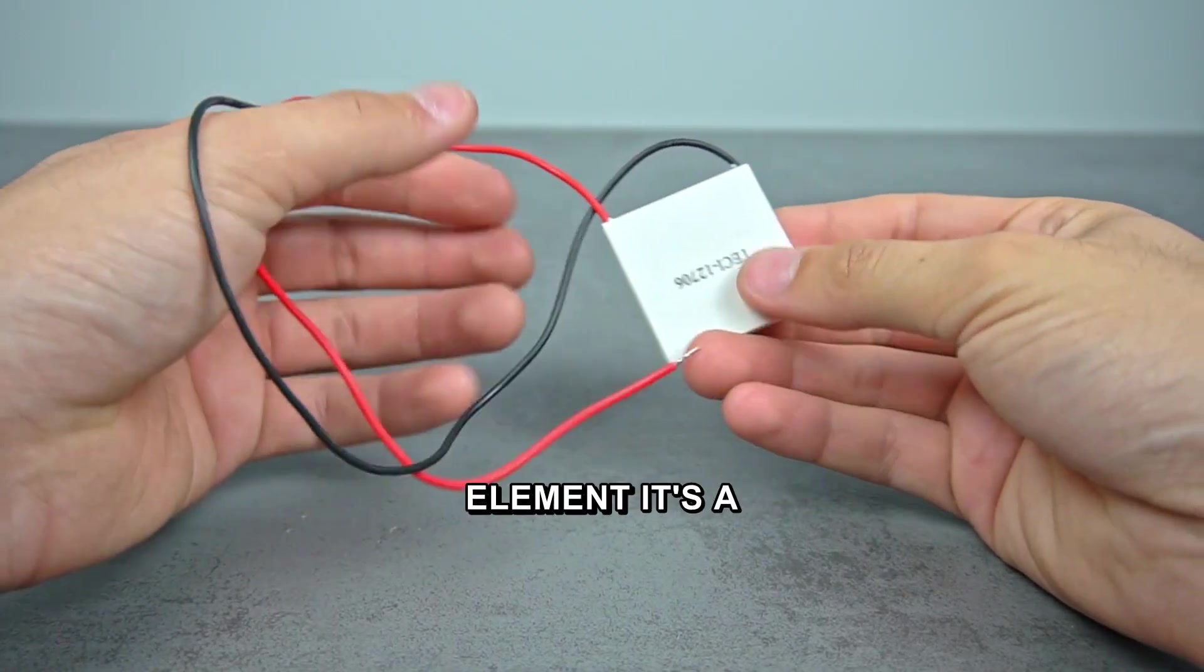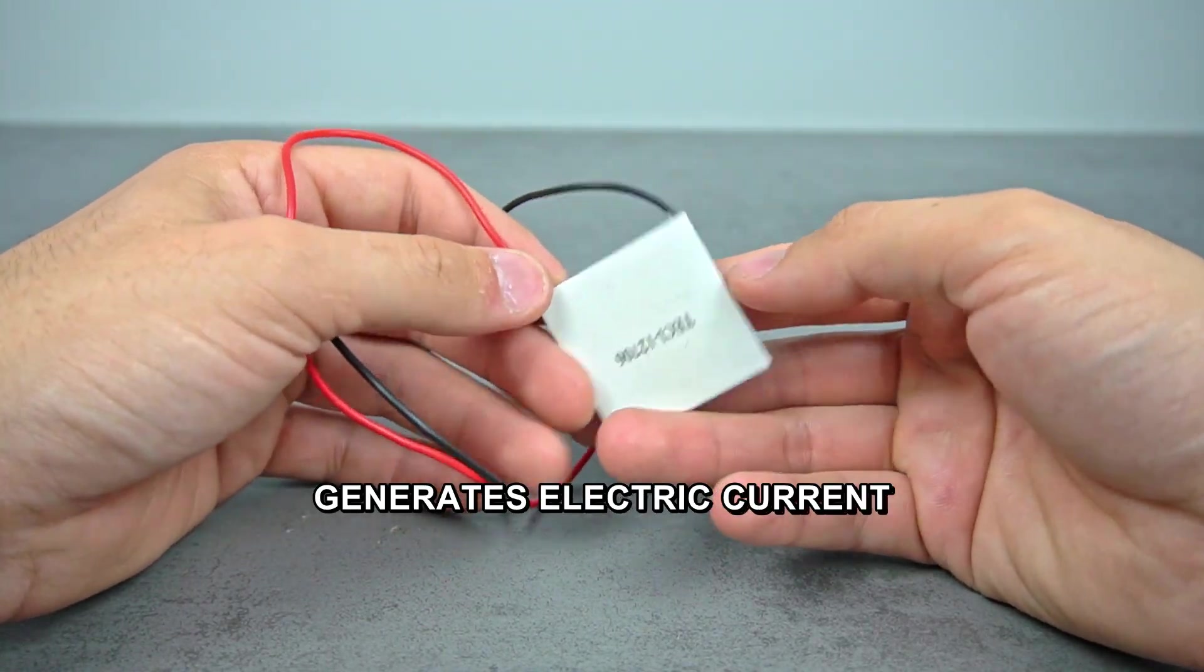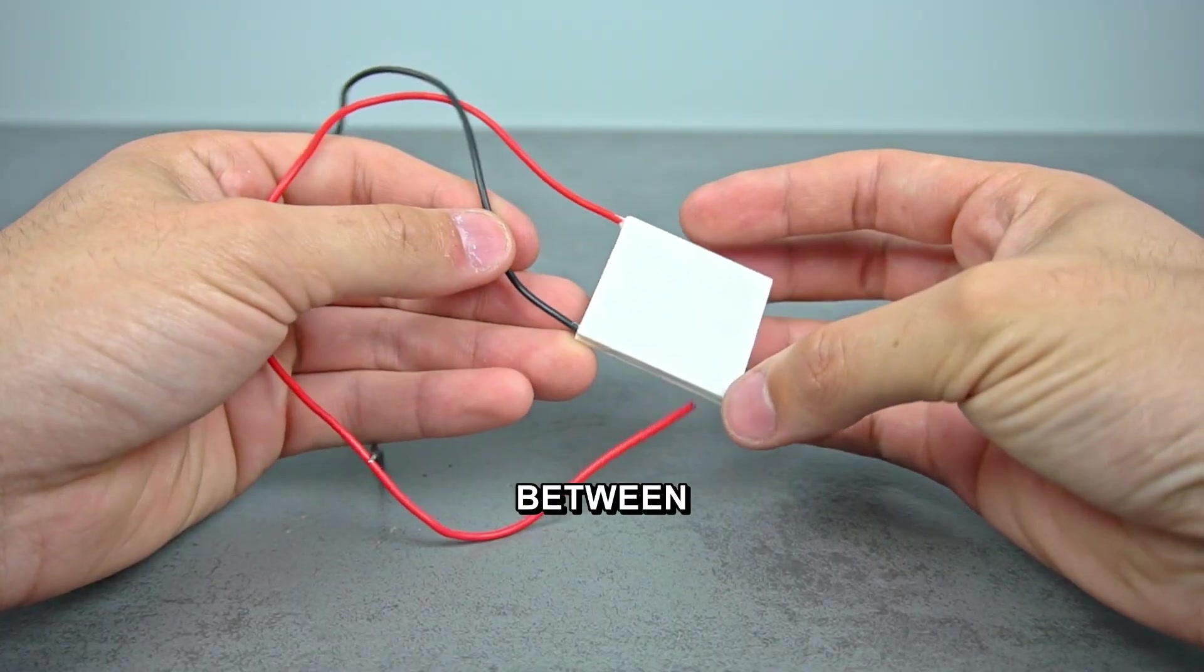Here's a Peltier element. It's a thermoelectric converter that generates electric current when there's a temperature difference between its sides.